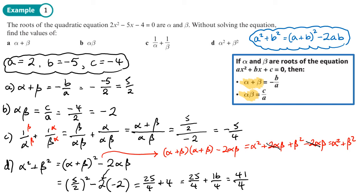Let me highlight the answers. 5 over 2, negative 2, negative 5 over 4, 41 over 4. And don't be like me and forget to put that 2 in like I did.